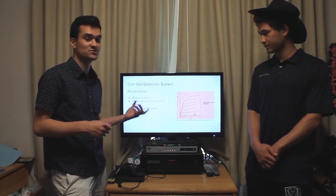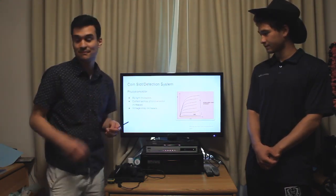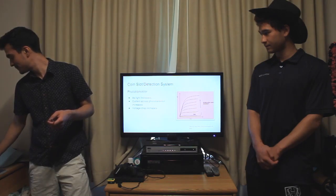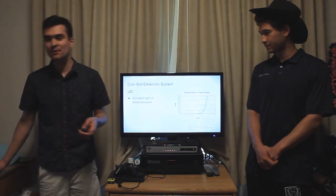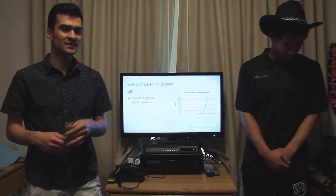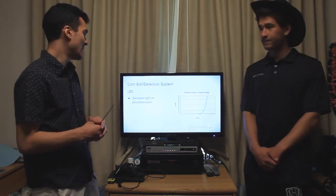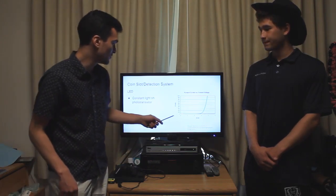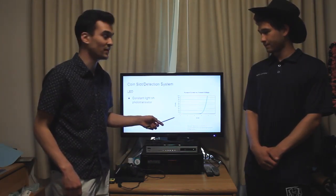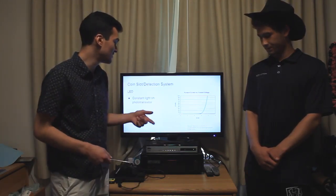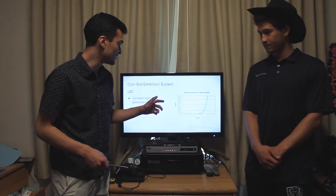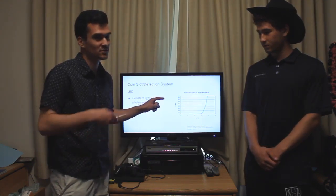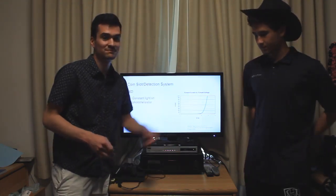Because more light causes more current, there's a greater voltage drop. For the LED, we wanted to use a constant LED light source. When you put a constant voltage across the LED and increase it, the current doesn't increase linearly like a resistor — it increases exponentially.